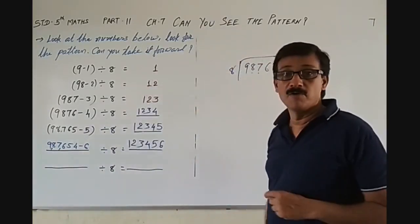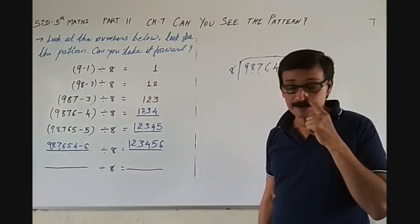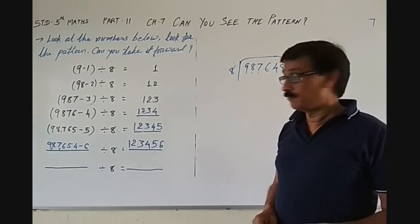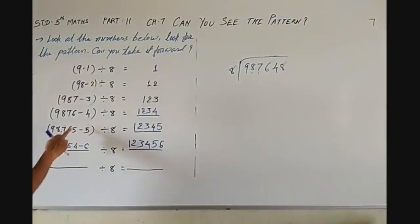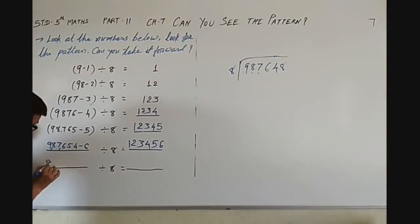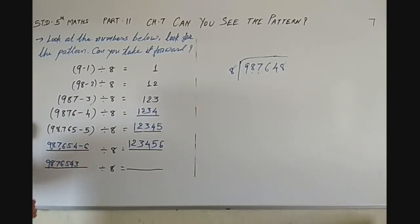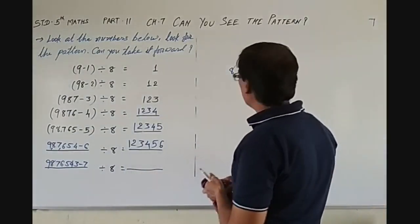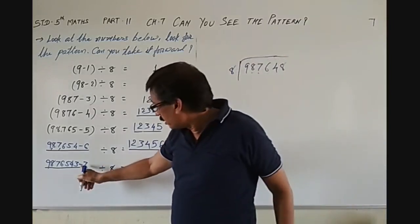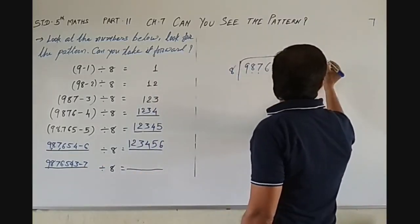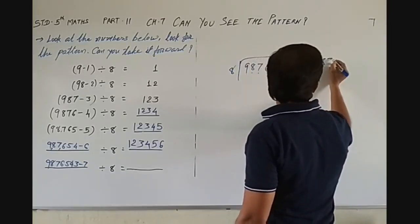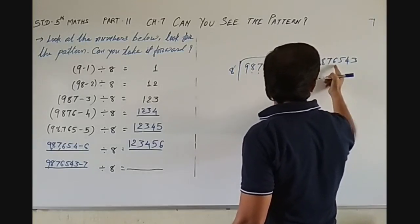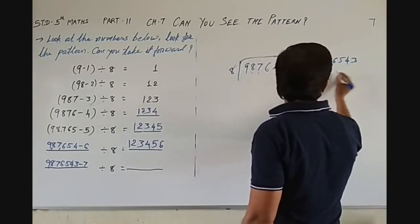So this is 1, 2, 3, 4, 5, 6. Now let's go for one more. Here, 6, 5, 4 — so I should go up to 9, 8, 7, 6, 5, 4 and 3. And here 4, 5, 6 minus 7, isn't it? So let's do it: 9, 8, 7, 6, 5, 4, 3 minus 7.